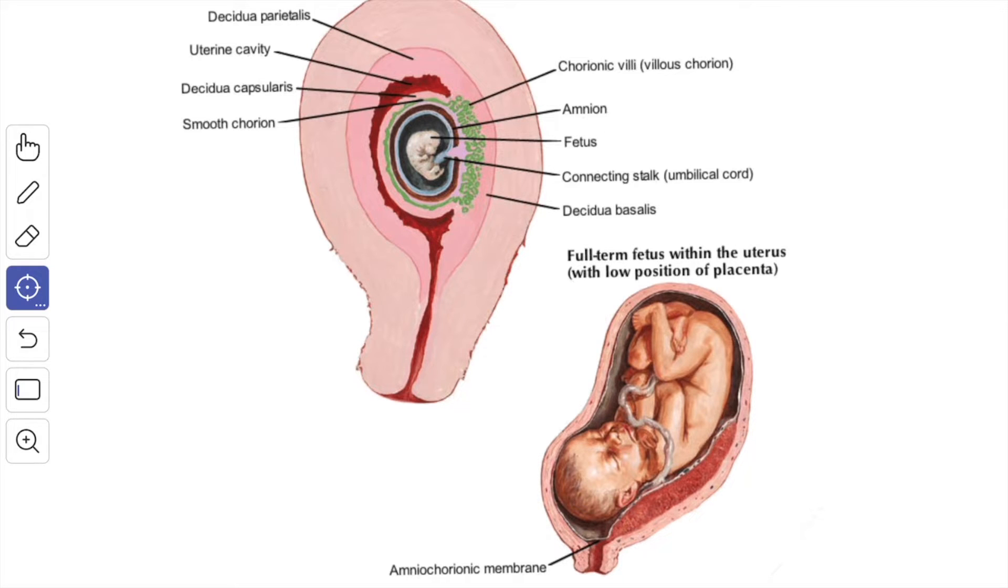The fetal part from the chorion frondosum. The maternal part which arises from the decidua basalis. When the blastocyst is embedded in the endometrial wall of the uterus, the endometrium is changed into decidua due to the decidual reaction of the stromal cells.